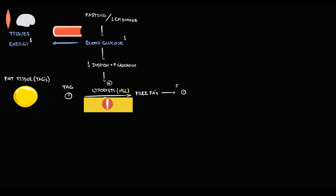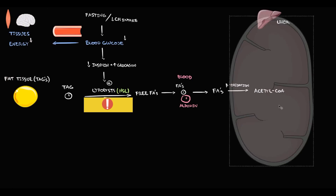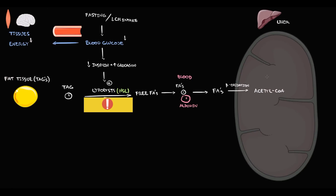In the blood, free fatty acids bind to albumin, and in the form of albumin complexes they are delivered to liver tissue. In the liver, free fatty acids undergo beta oxidation, a process that takes place in the mitochondria.